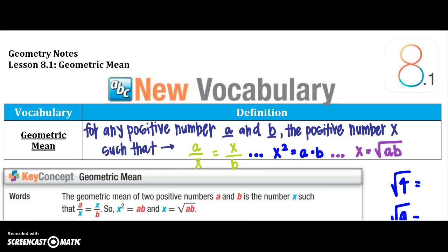The geometric mean is defined for any positive numbers a and b as the positive number x such that a over x equals x over b. We cross multiply to get x squared equals a times b, then take the square root to find x, which is our geometric mean.